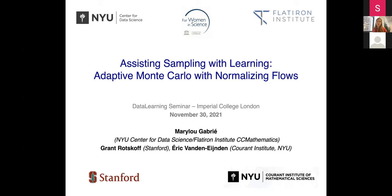Thank you very much for the invitation and giving me the opportunity of presenting this research to you. What I will talk to you about today is something at the interface between Monte Carlo methods and learning, and I will tell you more precisely how we can try to accelerate sampling algorithms using a specific type of generative models called normalizing flows. This is based on joint works with Grant Roscoff at Stanford and Erik van der Neiden at the Courant Institute here at NYU. I'm very happy to take questions during the talk, so don't hesitate to interrupt me.